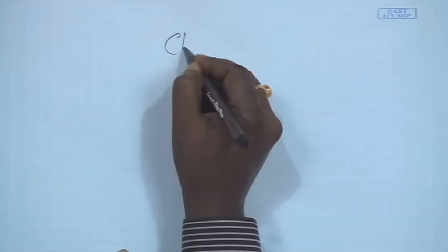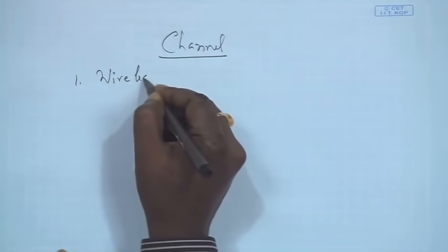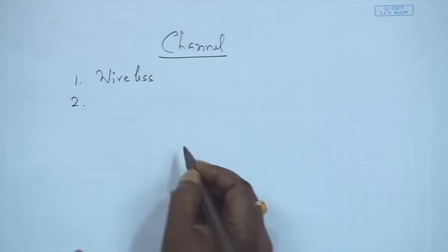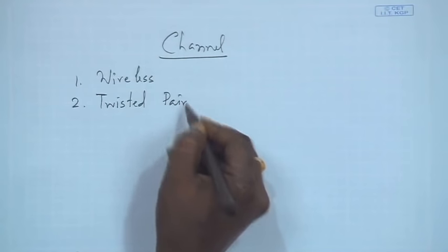Let us come back to the concept of channel. What do we mean by channel is something we want to discuss. We have already discussed different forms of channels. First is the wireless channel, which is the air media. Another is twisted pair, which is used for telephony transmission.